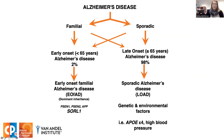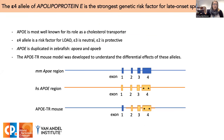Now, what about the sporadic late-onset form, which accounts for the majority of Alzheimer's cases? The strongest genetic risk factor for late-onset AD is inheritance of the epsilon-4 allele of the APOE gene. APOE is most well known for its role as a cholesterol transporter, and there are three main alleles. The epsilon-4 allele increases Alzheimer's risk about 15-fold when homozygous. The epsilon-3 allele has no associated risk. The epsilon-2 allele has a small protective effect. Unfortunately, APOE is duplicated in zebrafish — there's an APOE-A and an APOE-B gene — which complicates analysis of single heterozygous knock-in mutations.